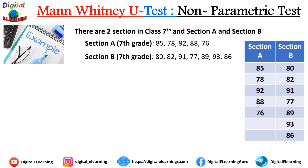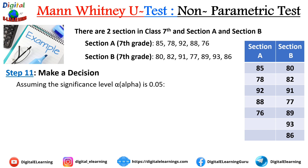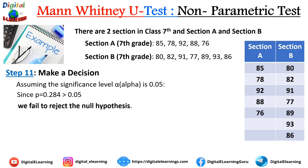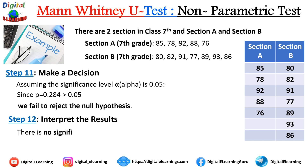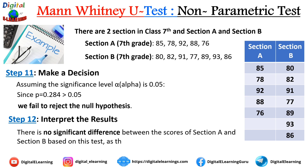Step 11: make a decision. With α = 0.05, the calculated p-value of 0.284 is greater than the significance level, so we fail to reject the null hypothesis. Step 12: interpret the result. There is no significant difference between the scores of Section A and Section B, as the p-value is not less than the significance level. This completes the example of the Mann-Whitney U test, a non-parametric test.